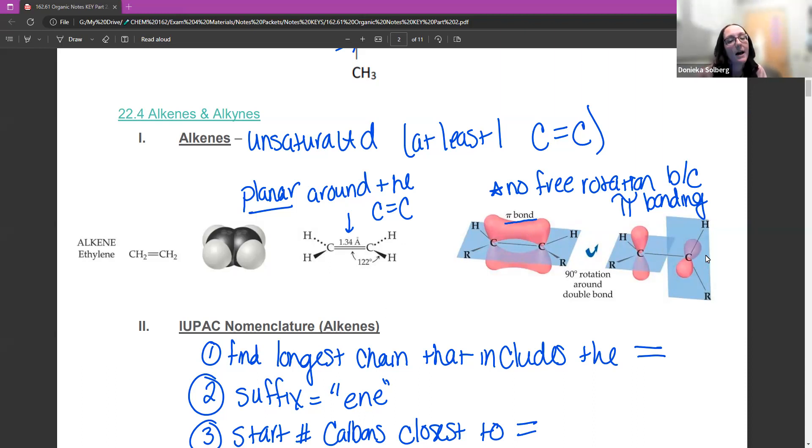A normal one that has only single bonds can rotate. This bond right here can turn right or left. A double bond, because of the way they are set up, cannot rotate. So it is a very rigid structure.